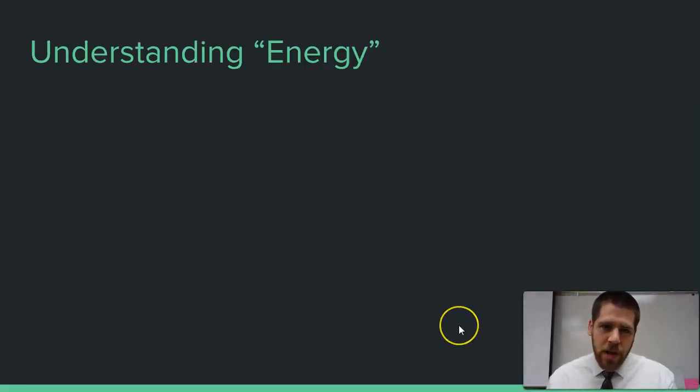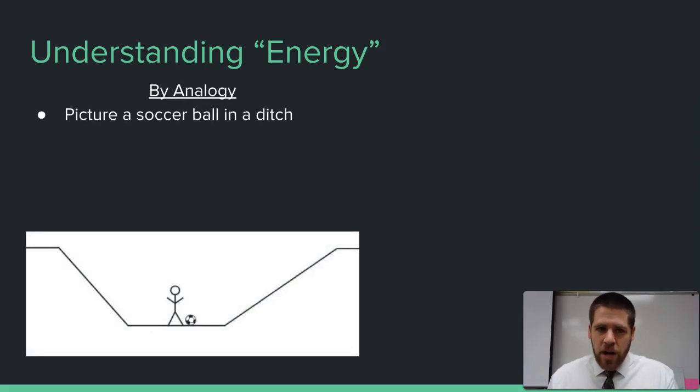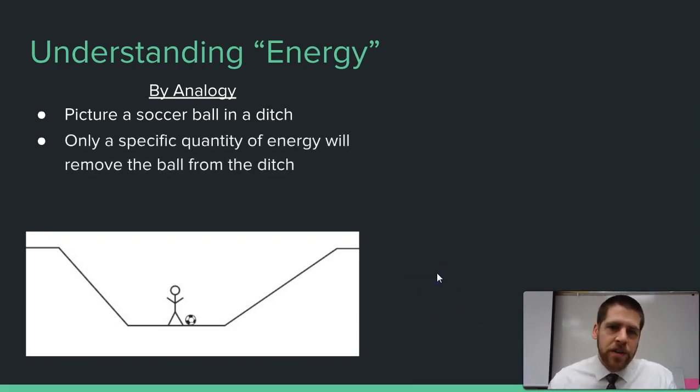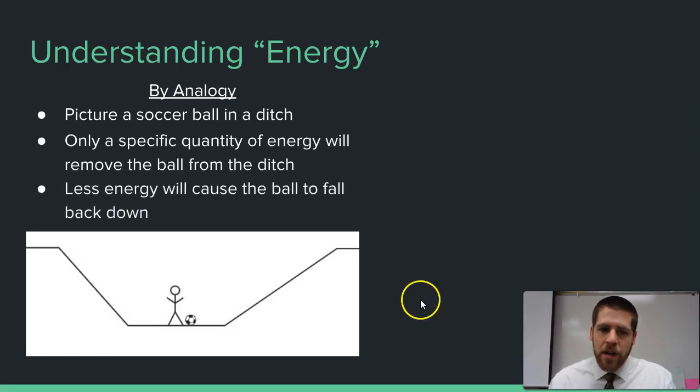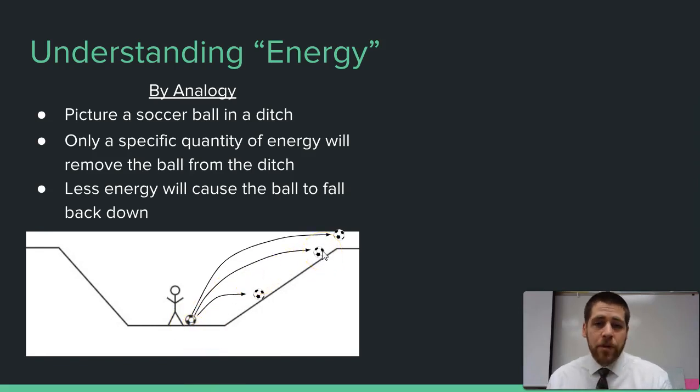Now what do I mean by energy? We're using this term energy, and it's difficult to wrap our heads around this. Let's use an analogy to help us understand it. Picture yourself in a ditch kicking a soccer ball. Only a specific quantity of energy can get the ball out of the ditch. If you kick it with less than that amount of energy, it's going to fall back down. Only if you get a certain amount of energy will you get it out of the ditch. It's at lowest potential energy when it's in the bottom of the ditch. The deepest it gets is the lowest potential energy. If you kick it up, now it has higher potential energy. You've had to input energy into the ball to get it up that high. It will naturally fall back down to the lowest energy.